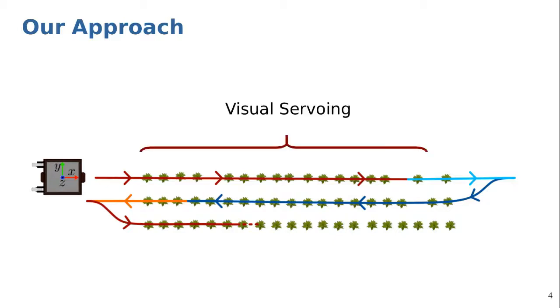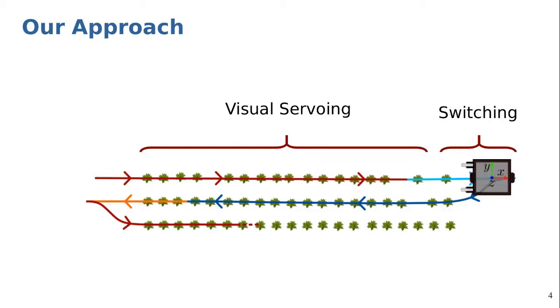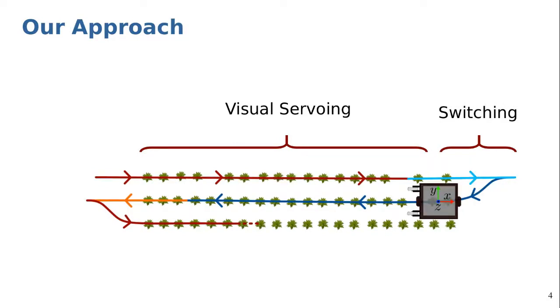Our approach integrates a visual servoing-based crop row tracking which guides the robot through all individual crop rows and a switching mechanism to transition between rows when the robot reaches the end of each crop row.